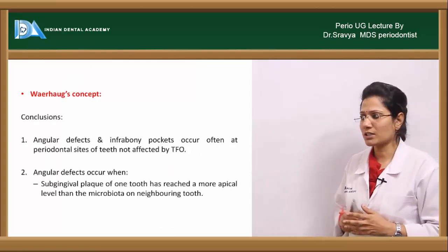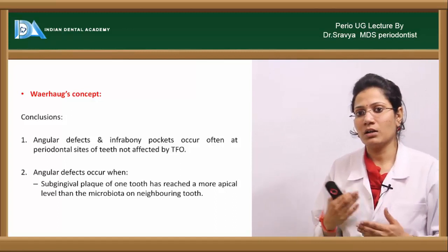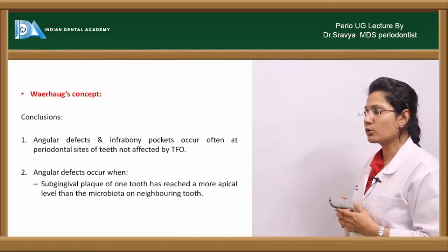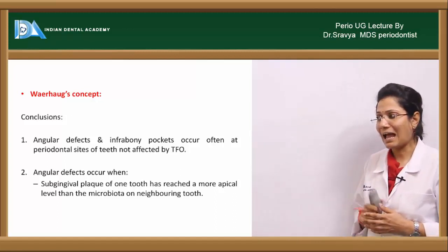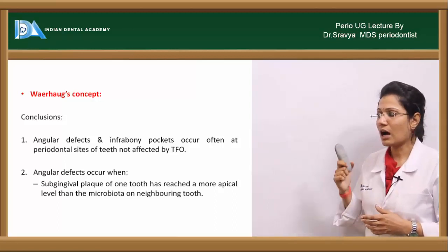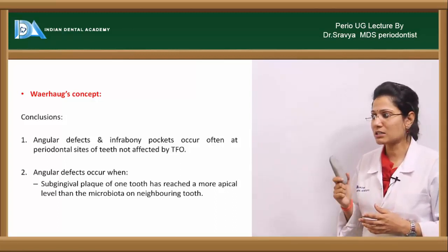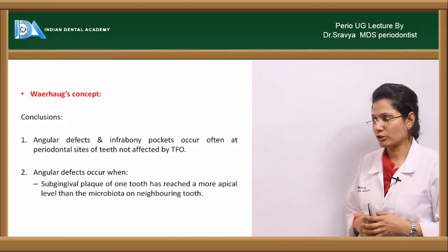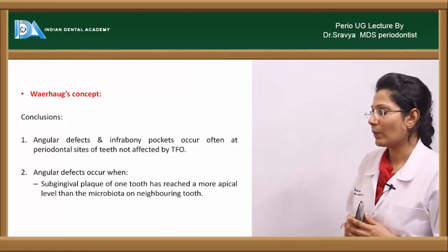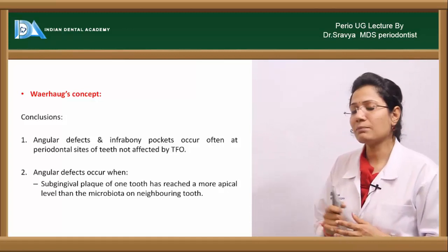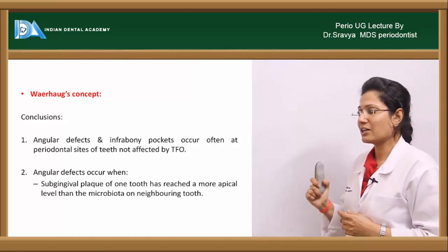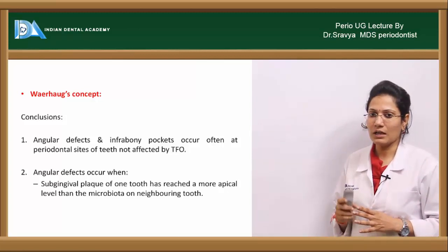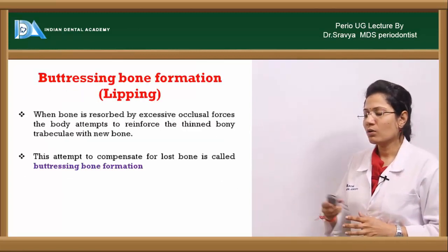According to Weyhock's concept, based on autopsy studies, he concluded that angular defects and infrabony pockets occur only often at periodontal sites of teeth that are not affected by trauma from occlusion. Angular defects occur when the subgingival plaque of one tooth has reached a more apical level than the microbiota on the neighboring tooth.